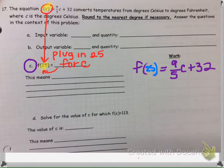We're going to substitute in 25 here for the variable. So now we're going to go ahead and do 9 fifths times 25, which is 45, and then 45 plus 32 is 77.